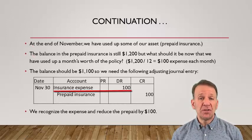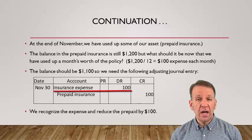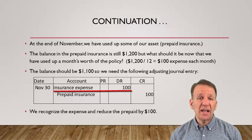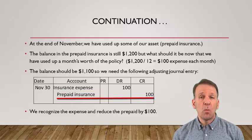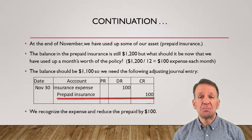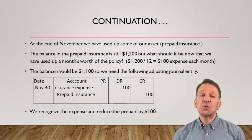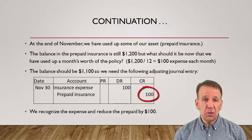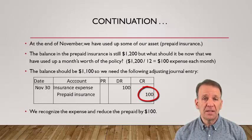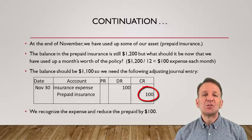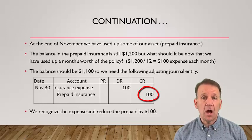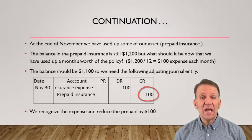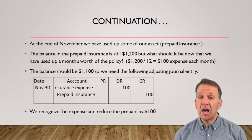We debit insurance expense $100. We credit prepaid insurance $100 to show we have used up one month's worth of the insurance policy. This credit to prepaid insurance is reducing the overall $1,200 debit balance in the account. So now our prepaid insurance has a balance of $1,100, which means we have 11 more months of coverage.